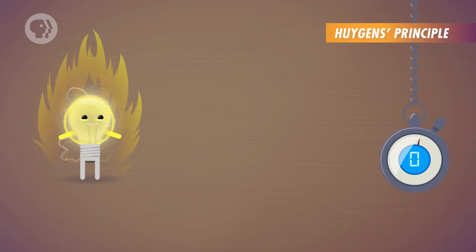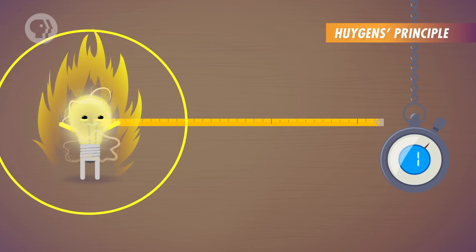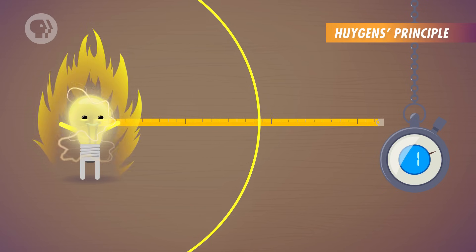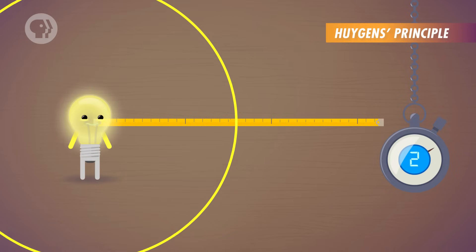Huygens knew that when you multiply the velocity of something by the amount of time it's traveled, you can figure out how far it went. And he figured that this would also be true for each individual point on a wave. Let's say you have a wave that's traveling 10 centimeters per second, and you want to know what the wave will look like after two seconds. To use Huygens' Principle, you first draw a bunch of little points along a wave.